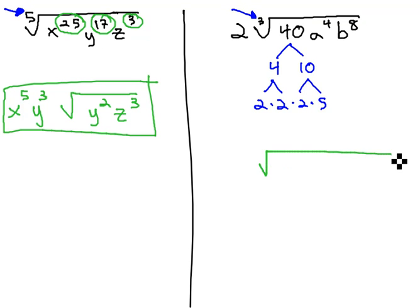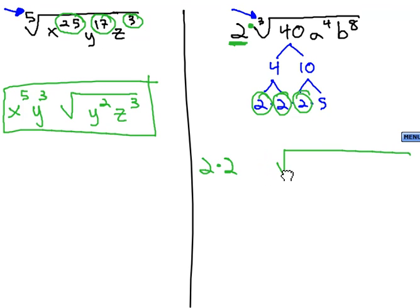Now, we can decide what we have outside and inside the radical. Don't forget the 2 that's in front of everything. And then, we look for groups of 3. 1, 2, 3 twos brings one of them outside.